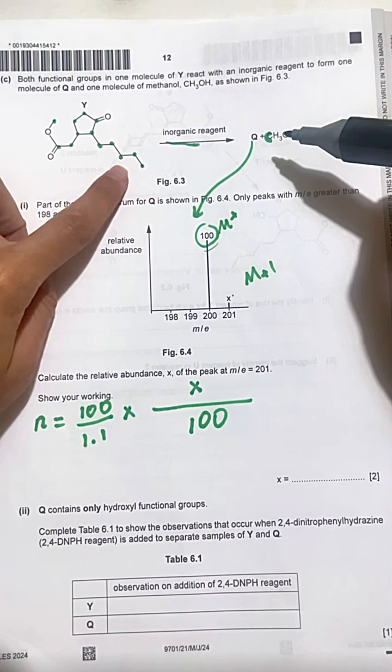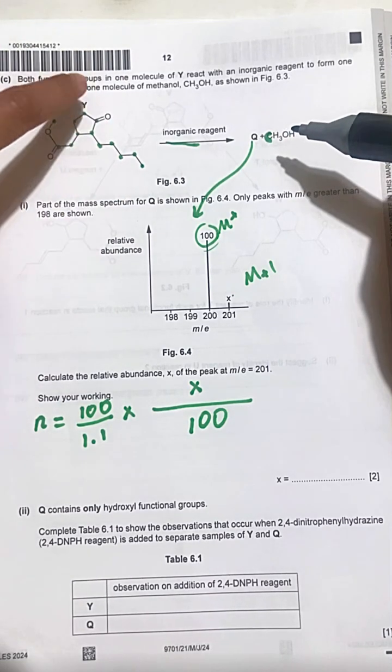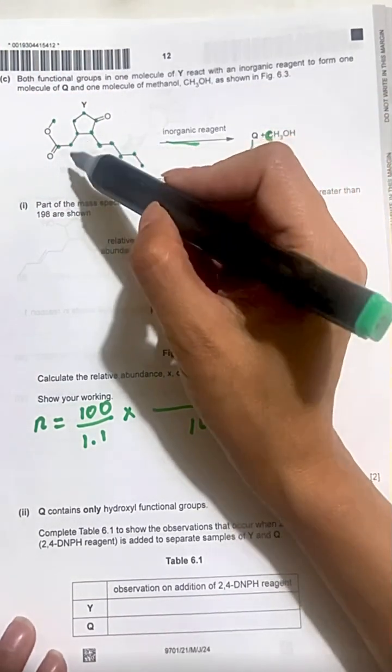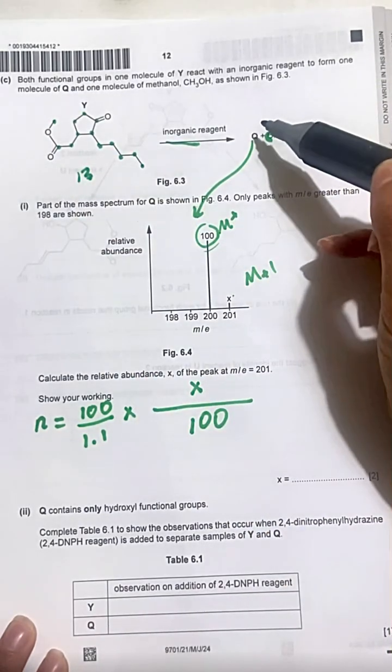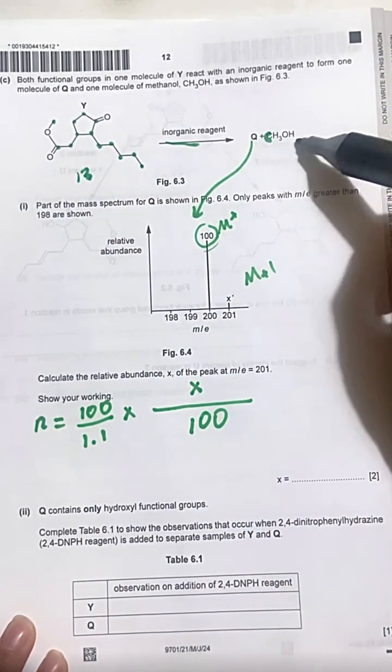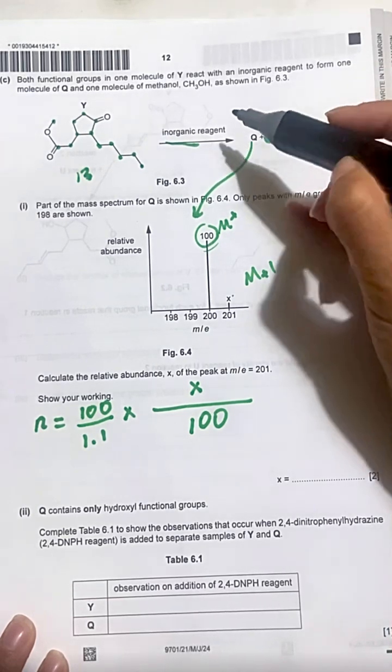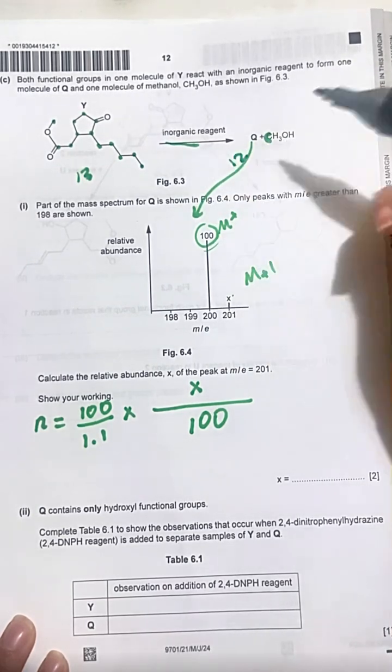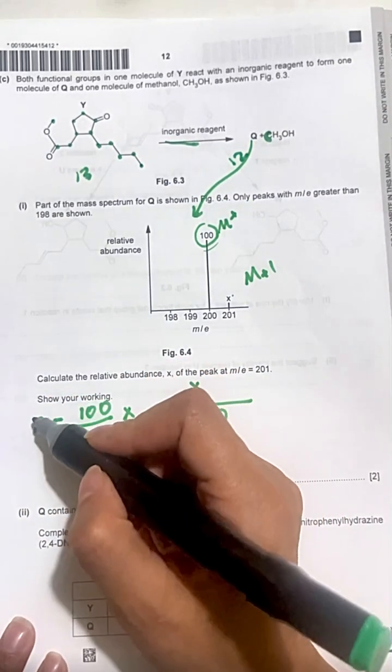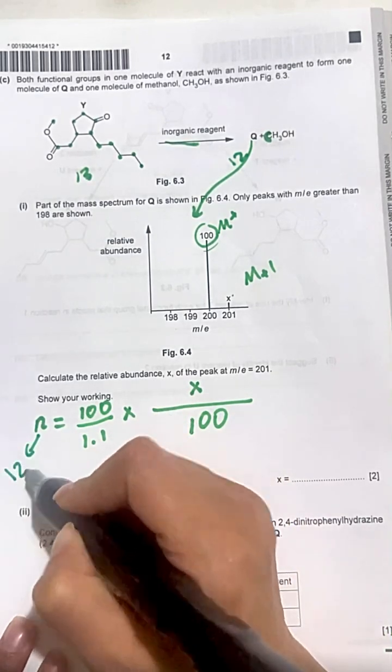Now, let's count how many carbons. Originally in Y, I highlighted them, they are 13. Minus 1, this 1 carbon goes to methanol, so Q has 12 carbons in it, so N is 12 in this case.